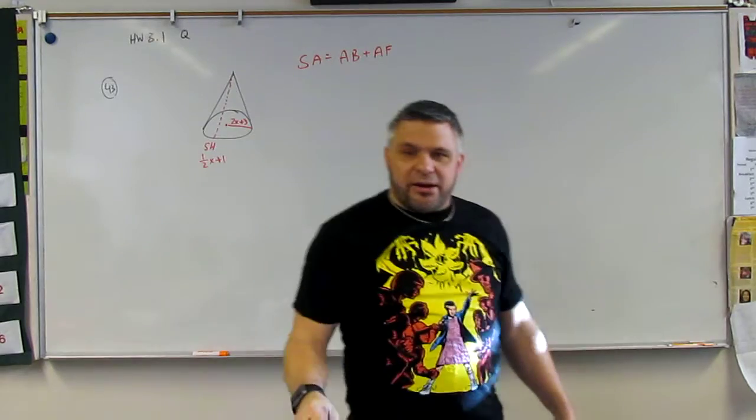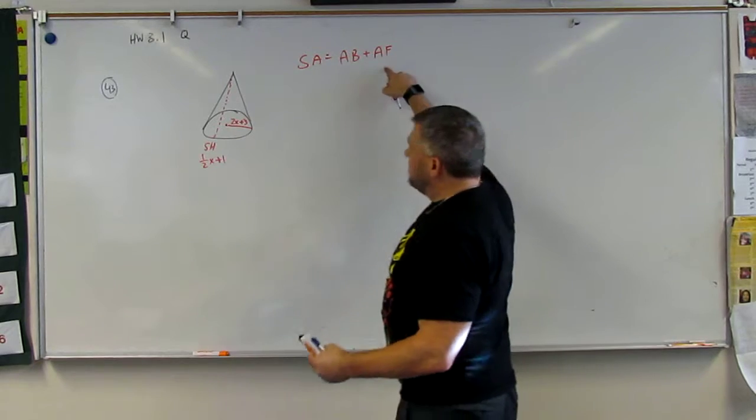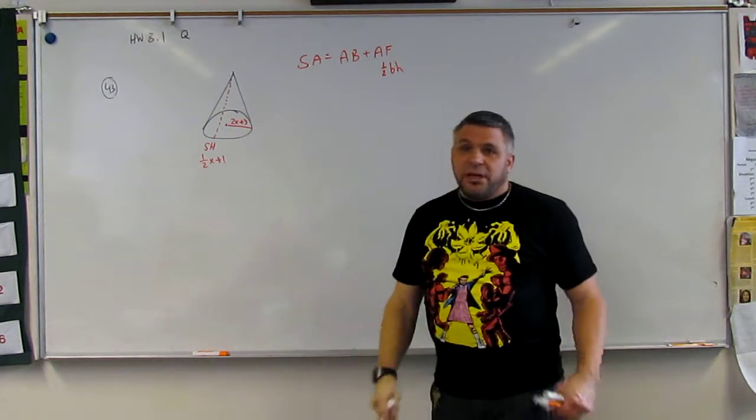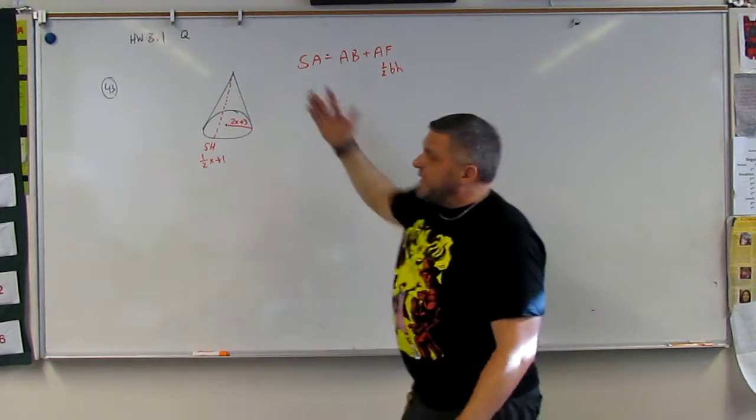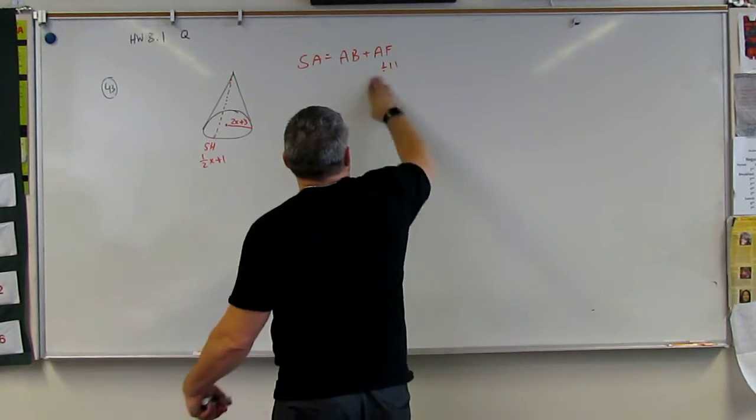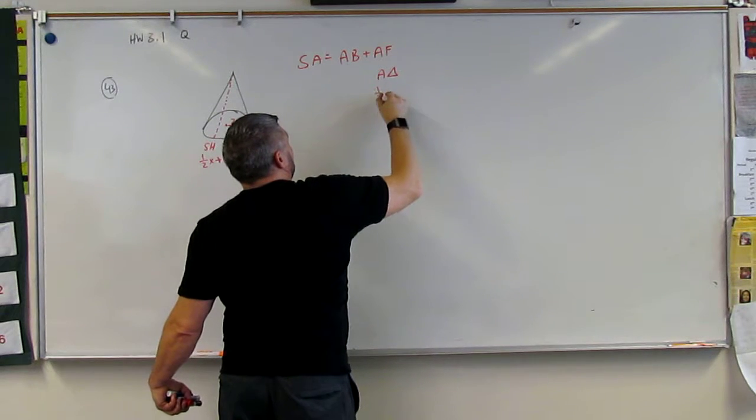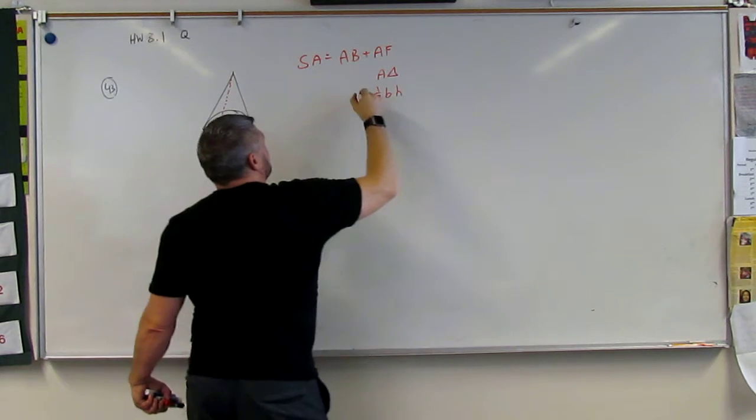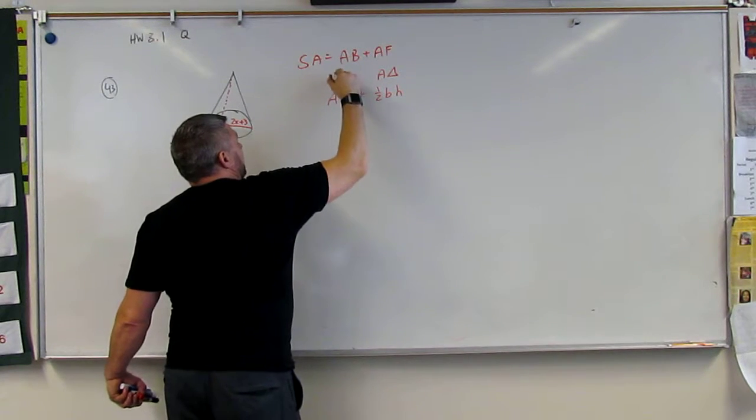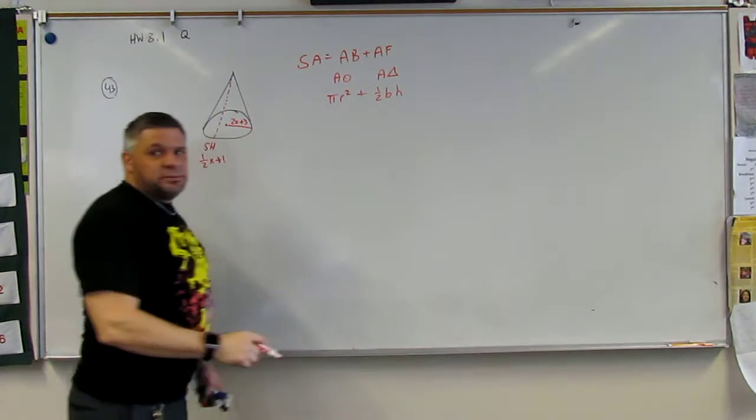So what's the area of a triangle? 1 half base times height. And in our case, it's the slant height. So what we're talking about is the area of a triangle plus the area of a circle, pi r squared.